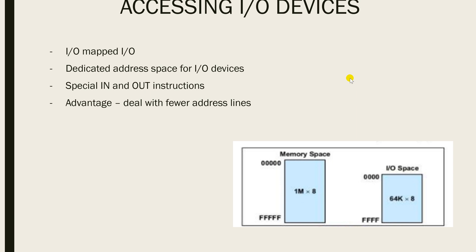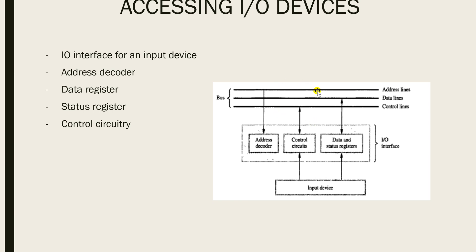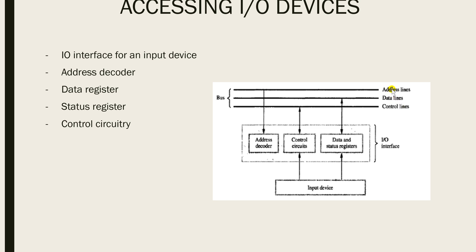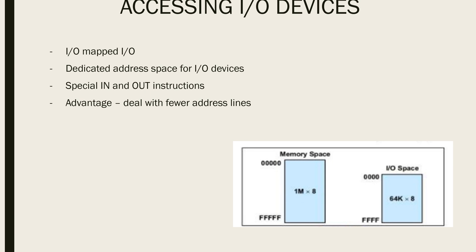Although the I/O address space is separate, the address lines themselves are not physically separate. Instead, a special signal on the bus indicates whether the requested read or write transfer is an I/O operation. When this signal is high, the memory unit ignores the transfer, and the I/O device examines the lower-order bits of the address bus to determine how it should respond. That covers I/O-mapped I/O.